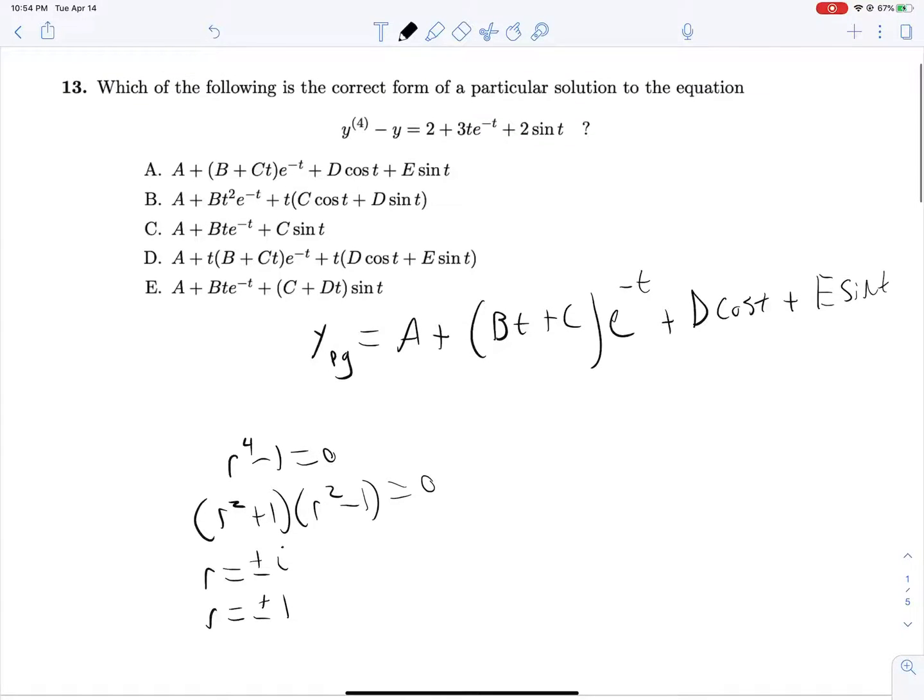So if R is plus or minus 1 and plus or minus I, that means that our characteristic solution, YC, will have the form C1 e to the T plus C2 e to the negative T plus C3 sine T plus C4 cosine T. And any overlap that we see here, we'll need to multiply that corresponding term by T. That means that we need to multiply both our sine and cosine by T to get away from these two. And we need to multiply this entire expression by T because this Ce to the negative T matches up with that Ce to the negative T. And so our answer is D.